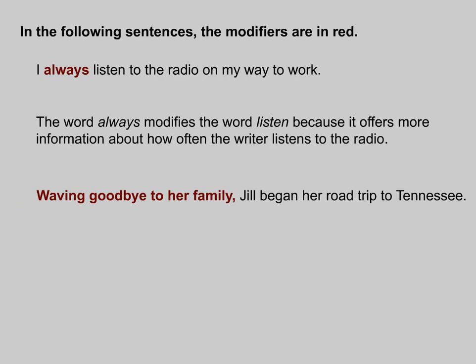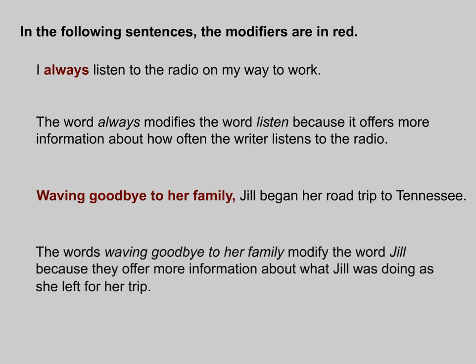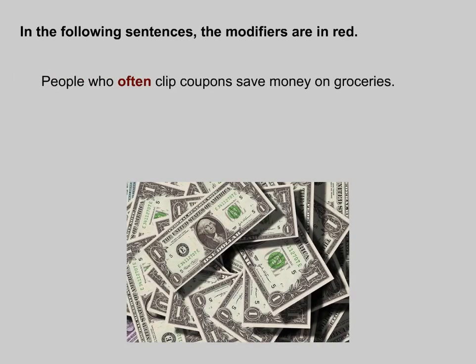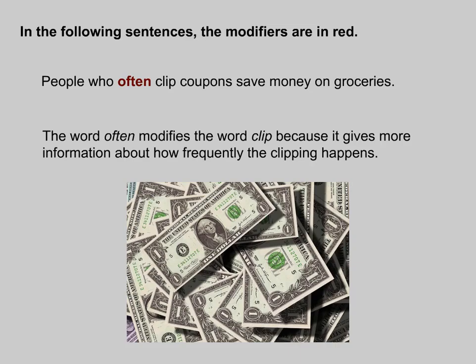Consider: 'Waving goodbye to her family, Jill began her road trip to Tennessee.' The words 'waving goodbye to her family' modify the word 'Jill' because they offer more information about what Jill was doing as she left for her trip. Another example: 'People who often clip coupons save money on groceries.' The word 'often' modifies the word 'clip' because it gives more information about how frequently the clipping happens.